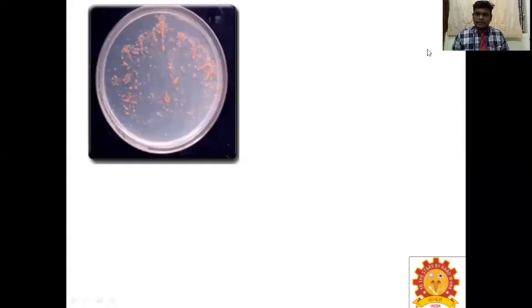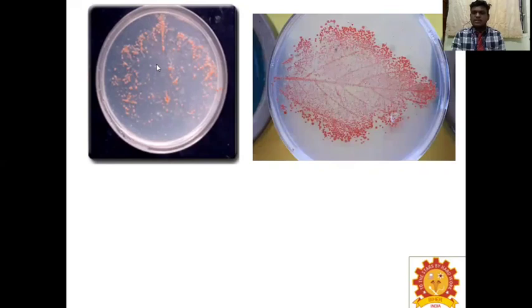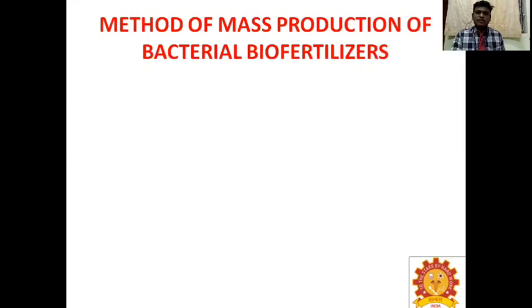Phyllosphere region means above the plant; rhizosphere means below the plant. The isolation technique of PPFM is different, following the leaf imprinting technique. First, prepare AMS (ammonium mineral salt) medium, pour it into the petri plate, and allow solidification. After solidification, do leaf imprinting on this petri plate. The entire leaf portion with its veins will be displayed as PPFM pink pigments.